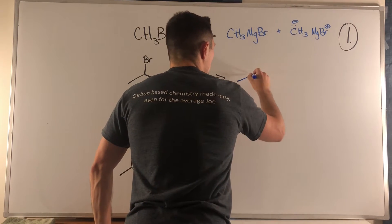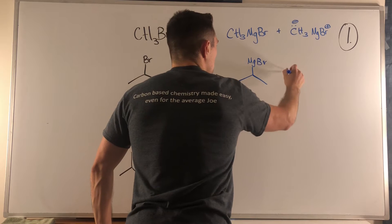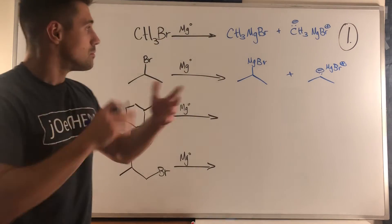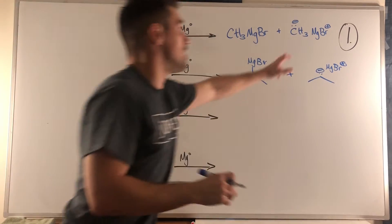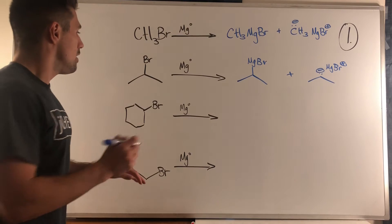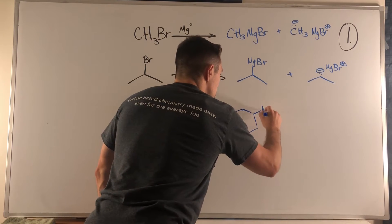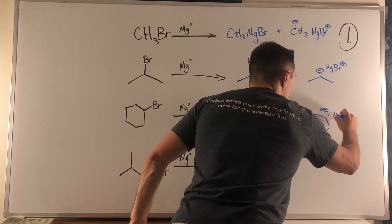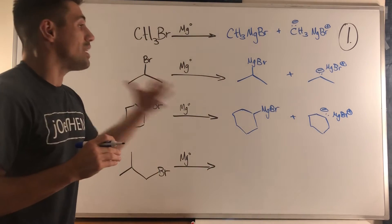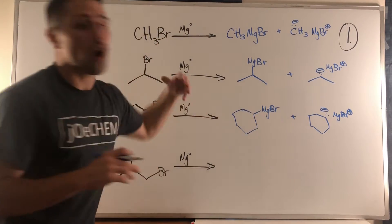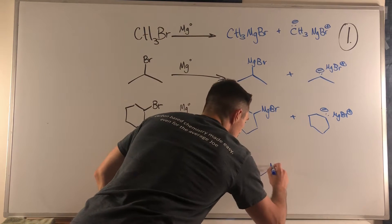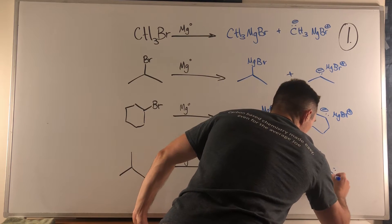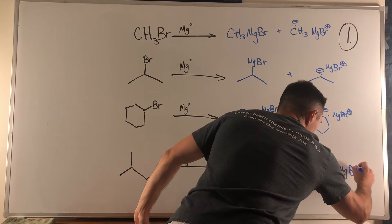Moving right along: this isopropyl bromide would turn into this Grignard reagent, and we can also express it in the charged form. There's no rhyme or reason to how I'm spatially organizing these — as long as you have the charges in the right place, that's all that matters. When we prepare Grignard reagents we have a nucleophilic carbon; the two electrons belong to the carbon they're attached to. Last but not least, we make the isobutyl bromide Grignard reagent — electrons on that carbon.